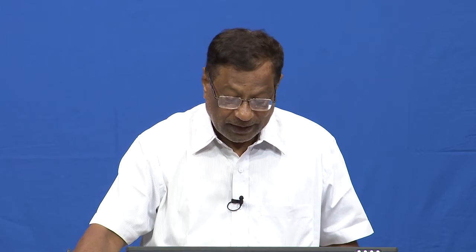In a spectroscopic technique, we use lenses, mirrors, diffraction systems, and also prisms. Diffraction is the current approach being discussed; prisms are also in use. All I have to do is make a pinhole, make the radiation pass through, collect it on a screen, and then move a slit from one end to the other to get different wavelengths. This principle is used in gratings — we will study more about gratings and their uses in spectroscopy in a few minutes.